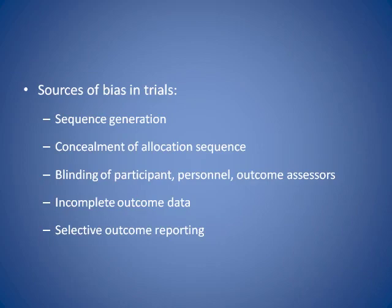Within Cochrane reviews, the sources of bias we address are: sequence generation — how has randomisation occurred, whether computer-generated, random number table, coin toss; concealment of allocation — has allocation been concealed from all involved until the patient is registered in a treatment arm; blinding of participants, personnel, and outcome assessors; incomplete outcome data — how have dropouts and withdrawals been addressed, whether there's an imbalance across arms; and selective outcome reporting.